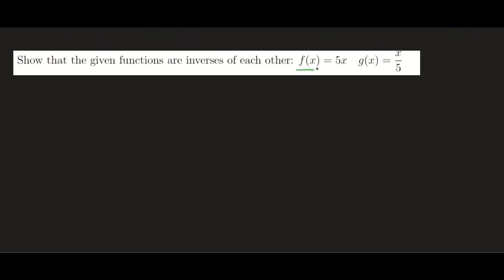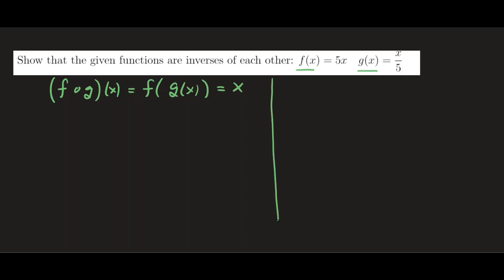So having said that, let's take a look at our first example. I have two functions f and g, and we want to show that they're inverses of each other. We're going to show this by doing the composition. We'll show that f circle g of x, which means f of g of x, gives us x. And then we'll show the composition in the reverse direction, g circle f of x, meaning g of f of x, will also give us x. If both statements are true, then we'll claim f and g are inverses of each other.